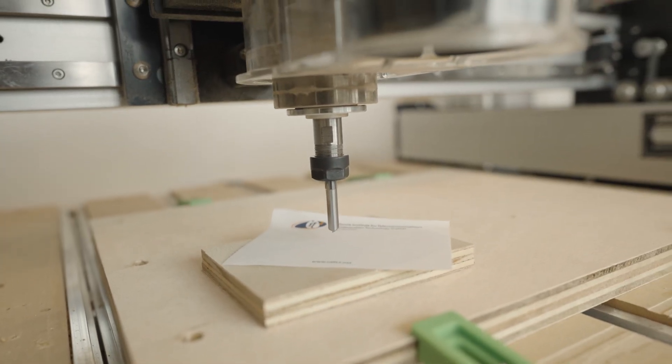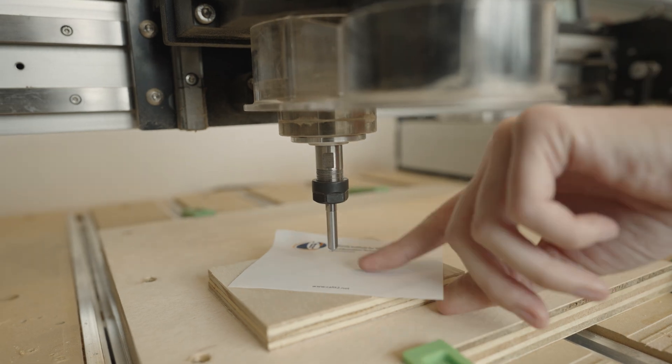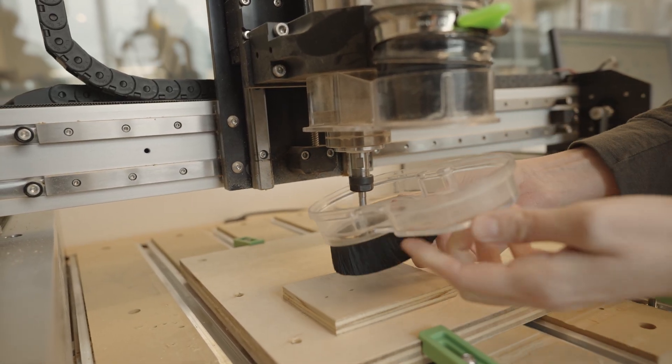After that, I'm going to lift the tool up, and then we're going to be able to run the program. Okay, so now we have zeroed our machine. We have set up the stock, and then we also put the dust cover back on. We're going to be ready to load in our G-code and run the program.